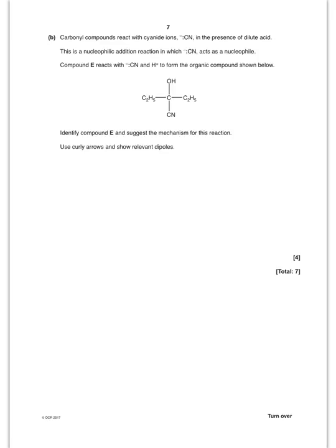They give me the product and they want me to work out what the original carbonyl compound was here. And I've added a CN and I've added an H there. So, it's quite straightforward. You just remove that, remove that. And so, the original carbonyl compound must have been C2H5, C double bond O, C2H5 like so.